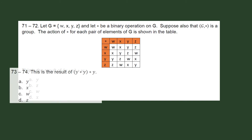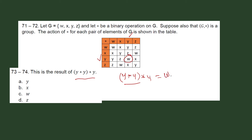Same table, same finite group, but this time we are asked to find the result of Y star Y, then star Y. We apply the operation first on the first two elements. From the table, Y star Y is W. Then W star Y is equal to Y. So our answer here is letter A.